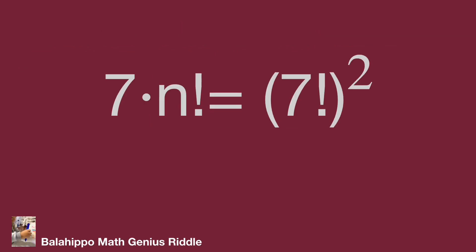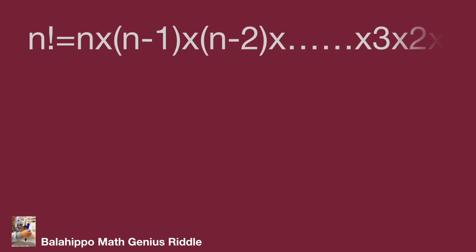The question: 7 times n factorial equals the quantity 7 factorial squared. There are two factorial items in this given equation. First, what is a factorial? The definition of factorial is: n factorial equals n times (n minus 1) times (n minus 2), decreasing by 1 each time, down to 2 times 1.